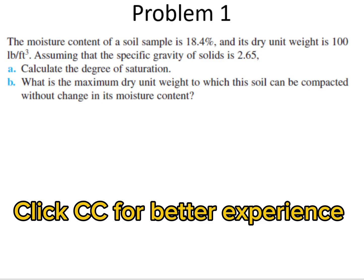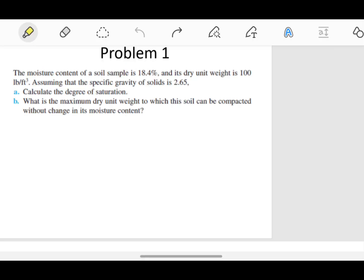I am going to solve this problem. The moisture content of a soil sample is 18.4%, the dry unit weight is 100 pound per feet cube, and the specific gravity is 2.65.